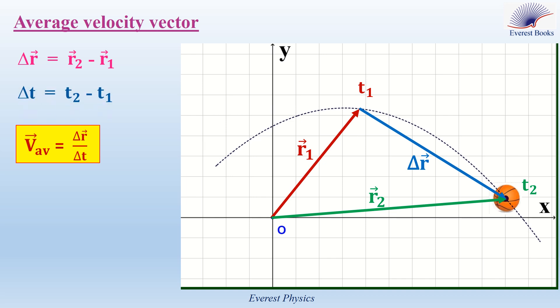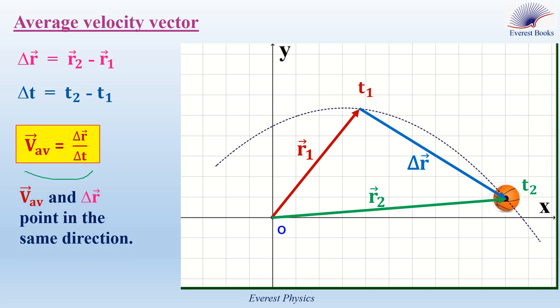Delta T is equal to the final instant minus the initial instant. Since delta T is positive, the average velocity vector and the displacement vector point in the same direction.